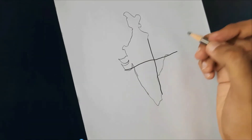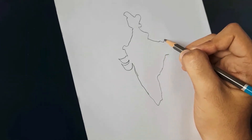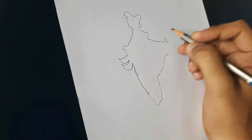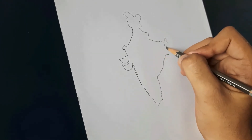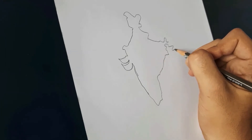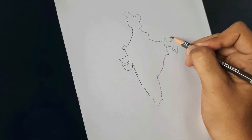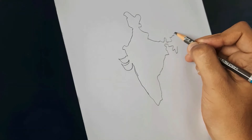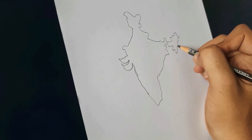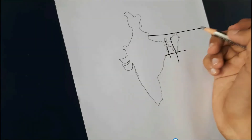You can use these imaginary lines as reference lines. Now complete the remaining outline of the north and northeast region — the Siliguri Corridor and northeastern states. While doing this, keep in mind the size of the northeastern region.